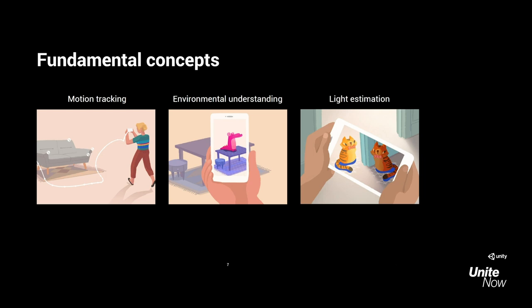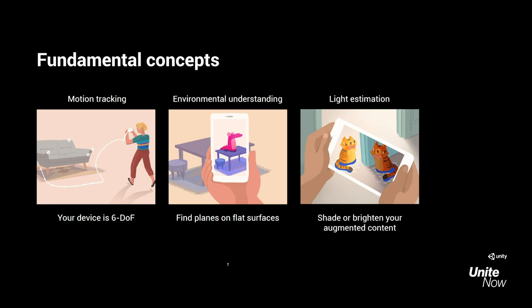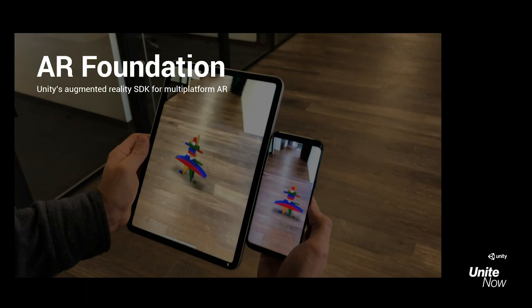From a practical or feature standpoint, motion tracking enables your device to be what we call a 6-DOF device, or 6 degrees of freedom — tracked both positionally and rotationally as you move throughout the space. For environmental understanding, we have the ability to find planes on horizontal and vertical surfaces, allowing us to understand the real world and place AR objects on those surfaces. Light estimation allows us to understand the lighting conditions in the environment so we can brighten or shade our augmented reality content to more accurately fit in with the real world.